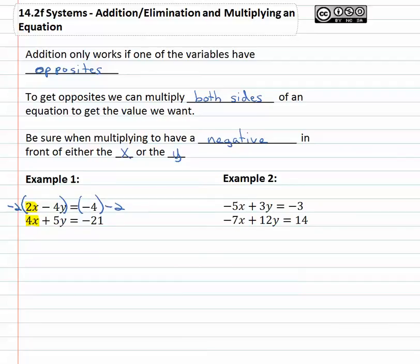Notice when we multiply by negative two, we now have -4x + 8y, make sure we distribute, equals positive eight. The second equation unchanged is still 4x + 5y = -21. And notice as we do that, we now have opposites in front of the x, four and negative four.